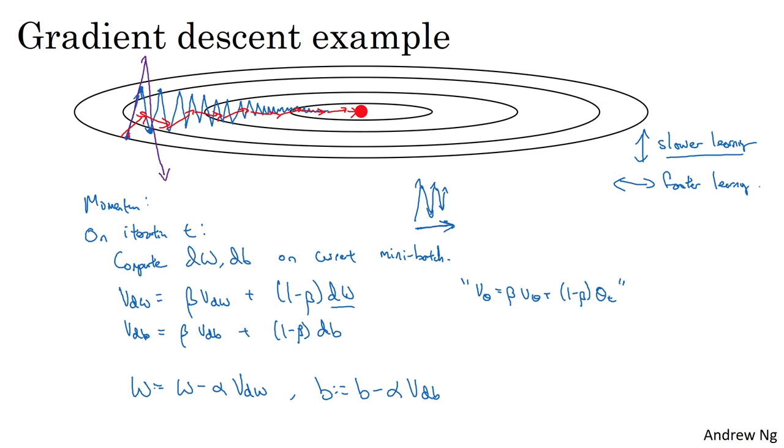One intuition for this momentum, which works for some people and not for everyone, is that if you're trying to minimize a bowl-shaped function - this is really the contours of a bowl because I'm not very good at drawing - but if you're trying to minimize this type of bowl-shaped function, then these derivative terms you can think of as providing acceleration to a ball that you're rolling downhill.